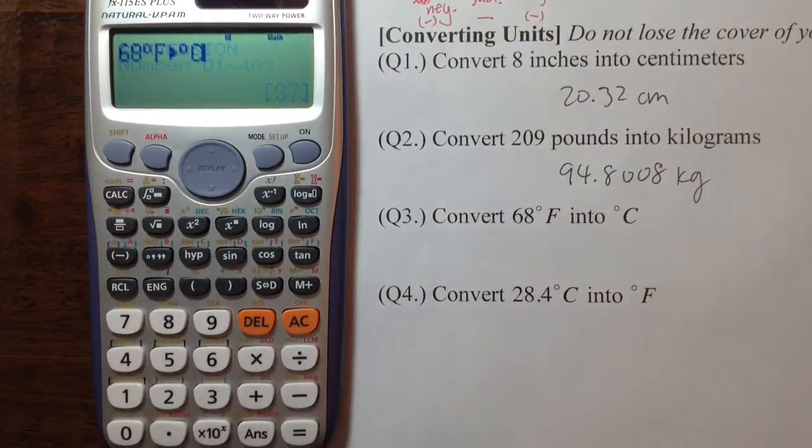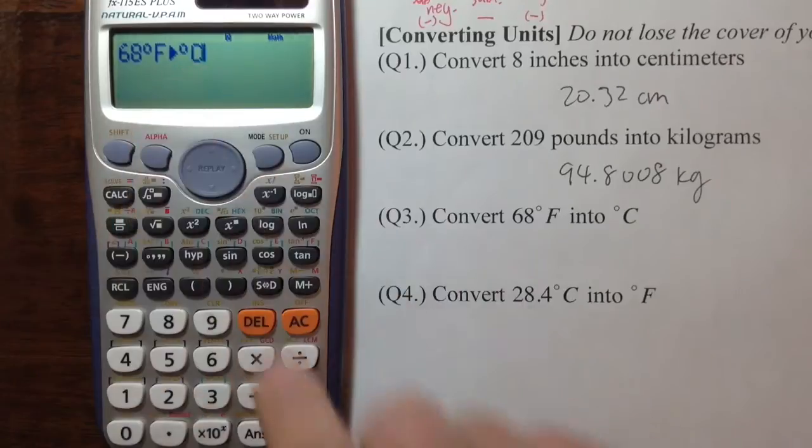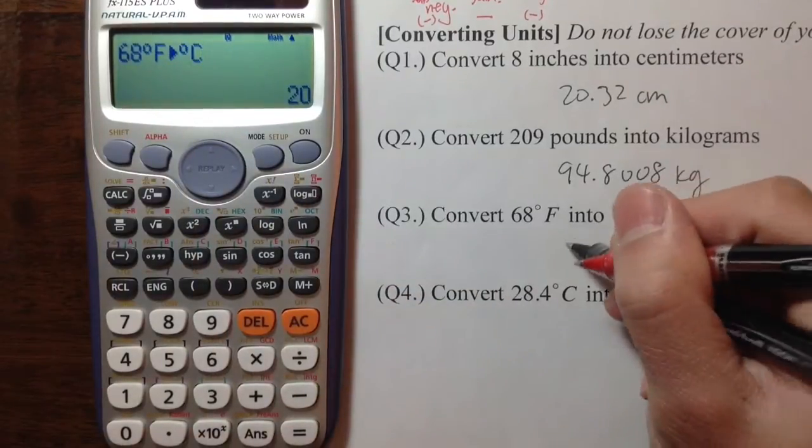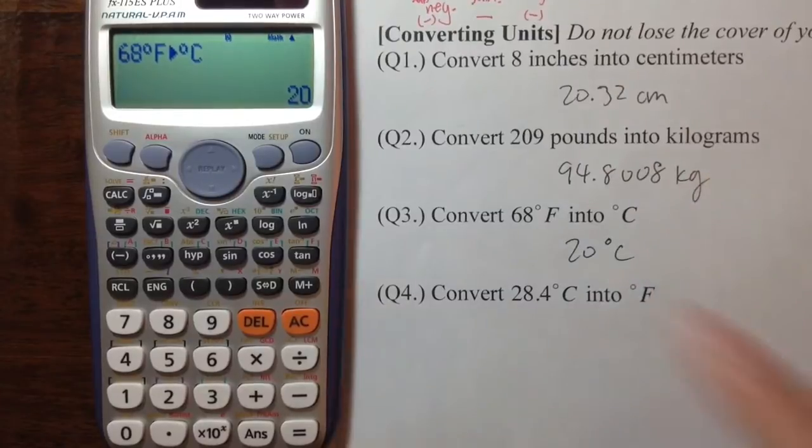So just press 37. Fahrenheit to C, Fahrenheit to Celsius. So equal, get 20. So 20 degrees Celsius. 68 degrees Fahrenheit is 20 degrees Celsius.